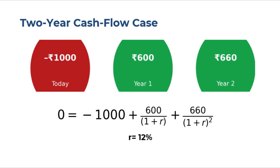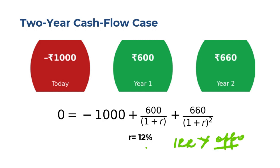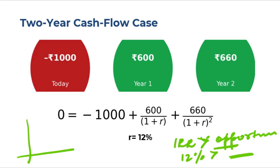Let's take a two-year example to see how IRR works with more than one inflow. Invest $1000, receive $600 in year one and $660 in year two. Setting NPV equal to zero and solving for IRR gives 12%. This means the project earns a 12% annual return on its cash flows. If IRR is greater than the opportunity cost of capital you accept; if below, you reject. As long as the NPV profile is downward sloping, both the IRR rule and NPV rule give the same accept/reject decision.